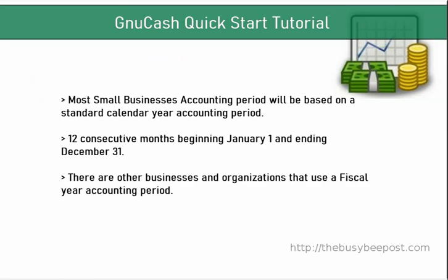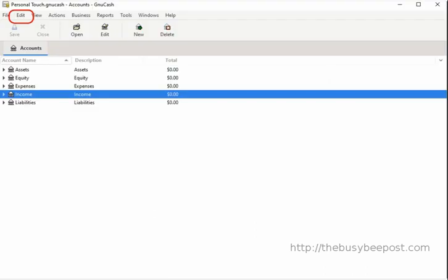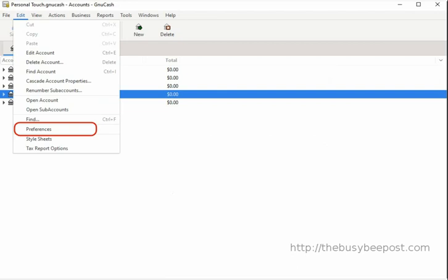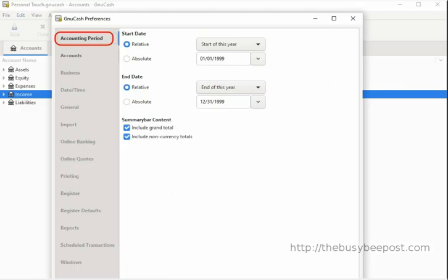There are other businesses and organizations that use a fiscal year accounting period. We will begin this tutorial with setting up a standard calendar year accounting period consisting of 12 consecutive months beginning January 1 and ending on December 31st. To begin, select Edit from the menu bar and when the menu opens, click on Preferences.